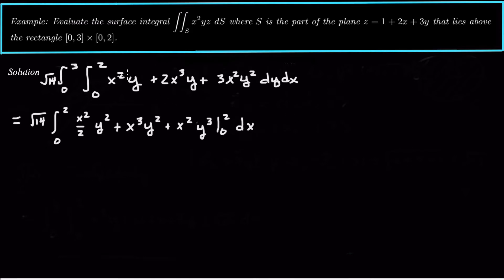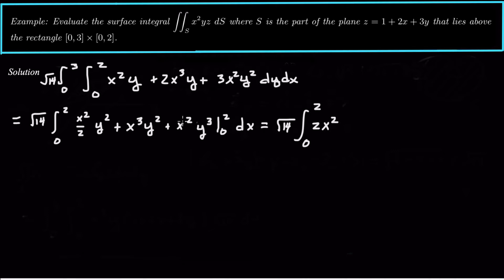Remember those constants multiplied in: one-half y squared cancels with the 2, and one-third y cubed cancels with the 3. Plugging in the bounds for y — plug in 2 and we get the numbers; plug in 0 and we get zero, so nothing to subtract. This gives square root of 14 times the integral from 0 to 3. Plugging in y equals 2: 2 squared is 4, so that gives 2x squared, plus 4x cubed, plus 8x squared dx.